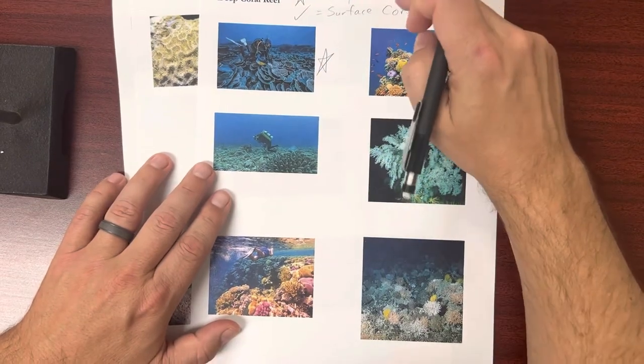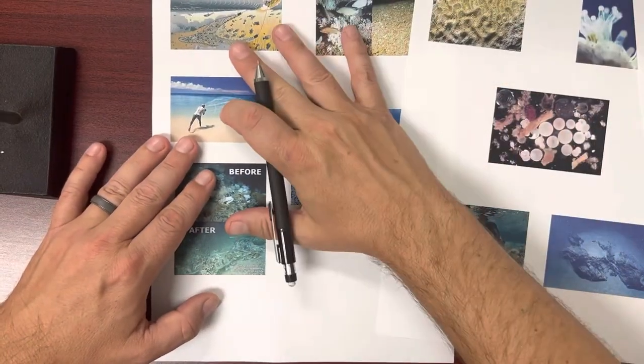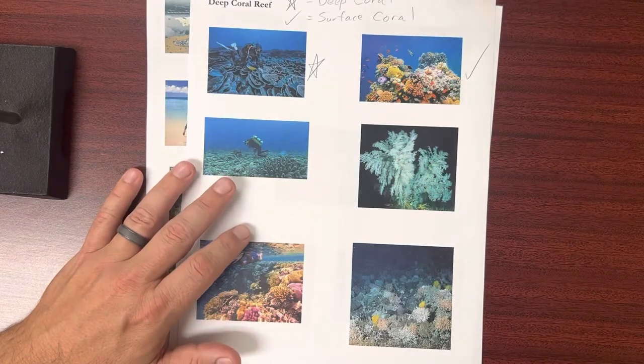Okay, and you just go through each one marking whether it's associated with deep coral or surface coral. And you're going to do the same for all of these pages, so three pages here correspond with the three pages I went over in the lecture. All right, thank you very much.